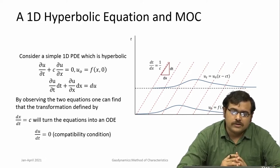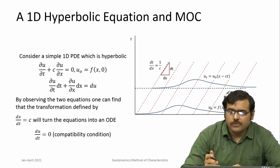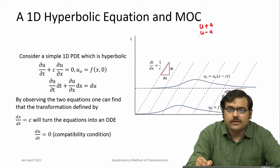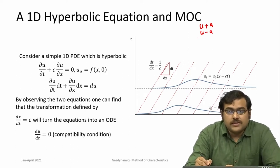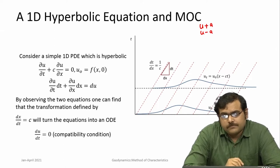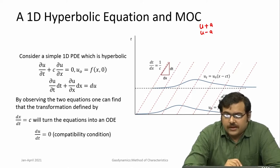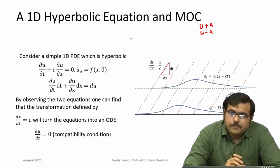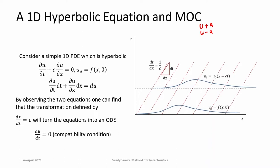We encountered hyperbolic PDEs and method of characteristics early on when we were looking at unsteady flows — there are particular lines across which the solution propagates, which are u plus a and u minus a for isentropic flow. That was the unsteady case. Now we are discussing the steady two-dimensional case. Even here, in the case of steady two-dimensional supersonic flow, the flow is hyperbolic and it goes along particular lines. It is always useful to look at a simple equation to understand how it works, then extend to more complex situations.